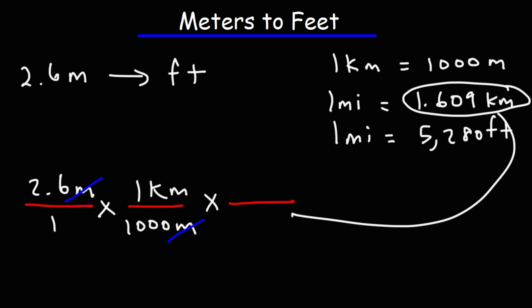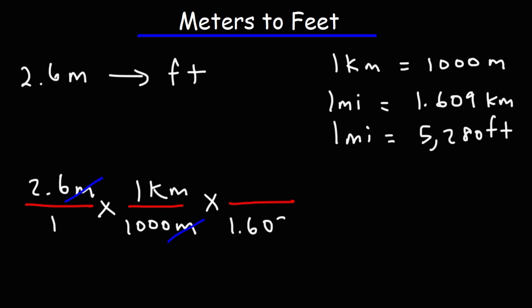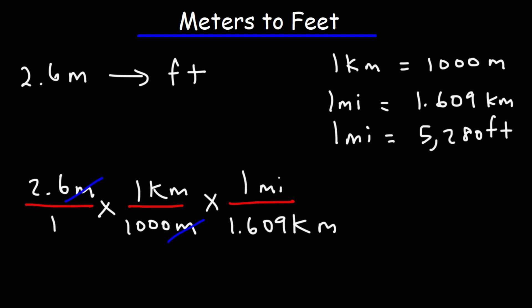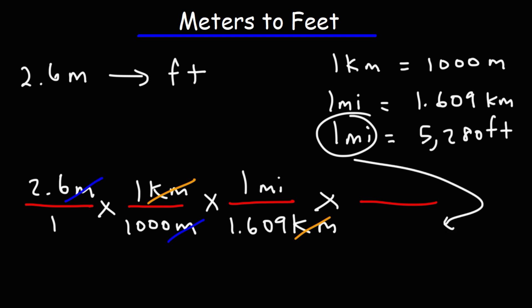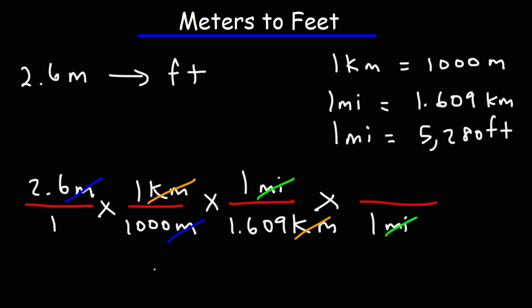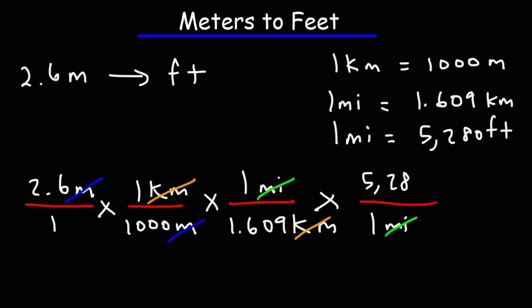So this part — 1.609 kilometers — goes on the bottom, and the other part of the second conversion factor goes on top. Now we can cancel the unit kilometers. For the last step we're going from miles to feet, so miles goes on the bottom so we can cross out that unit, and 5,280 feet goes on top of the fourth fraction. Every unit needs to cancel except the unit we desire, which is feet, so our final answer will be in feet.